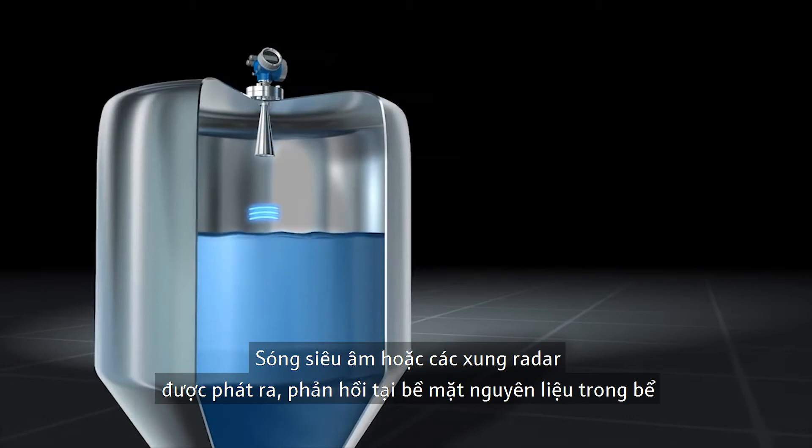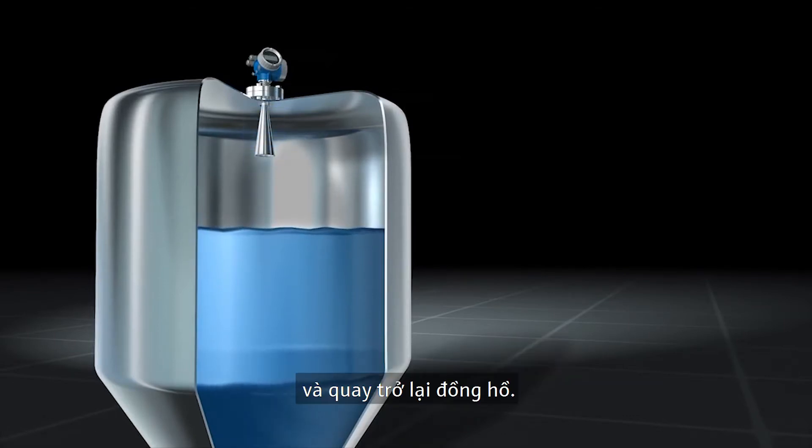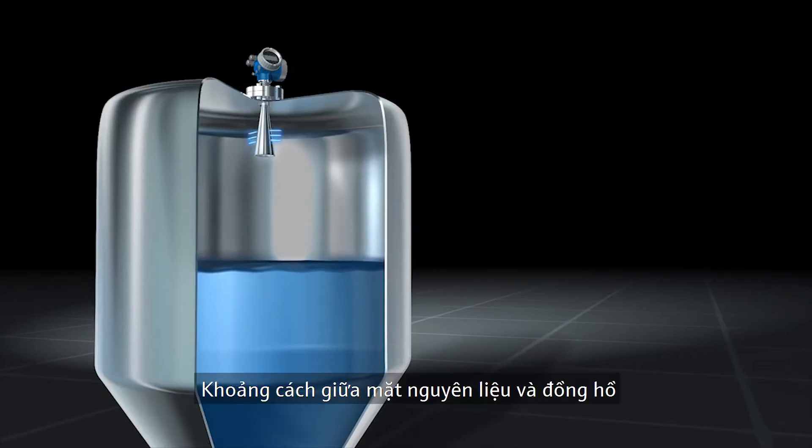Ultrasonic or radar pulses are emitted, reflected on the medium surface, and received again by the sensor. The distance between the instrument and the surface of the product can be calculated by measuring the time of flight.